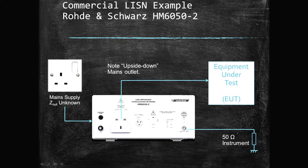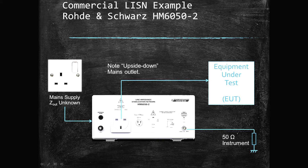Looking at a real LISN — here's the Rohde & Schwarz HM6050, a relatively low-cost box. It includes the transient limiter with a button to disable it, which obviously has to be used with caution. There's also an artificial hand output for handheld devices and a selectable earth network. For certain standards you need to effectively lengthen the earth connection, which is what that button does. We also have the selector between live and neutral, and when you toggle that you'll hear the relay switching in that external or internal 50-ohm load.